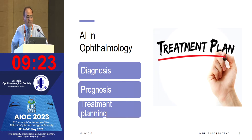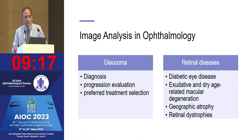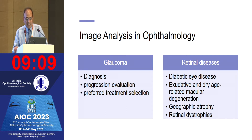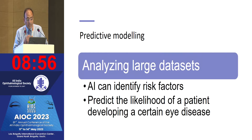Image analysis in ophthalmology is a key part of AI and has been widely used in glaucoma for diagnosis, progression evaluation, and treatment selection. In retinal diseases such as diabetic retinopathy, exudative and dry age-related macular degeneration, geographic atrophy, and inherited dystrophies, AI-based image analysis plays an important role.